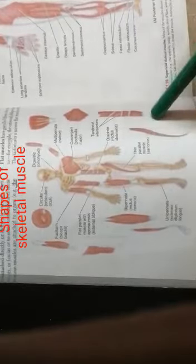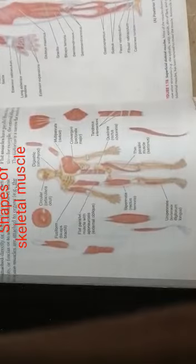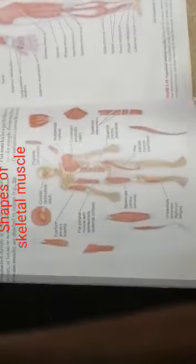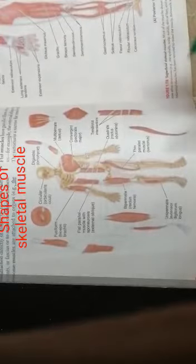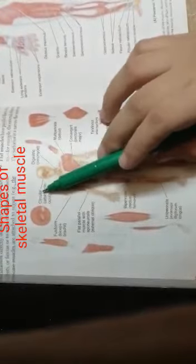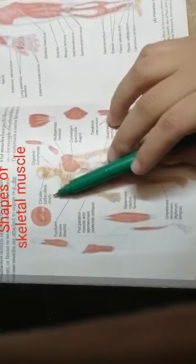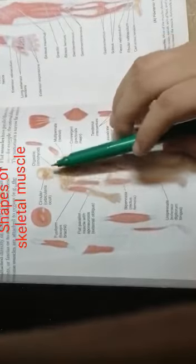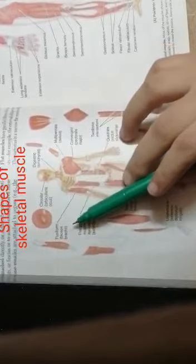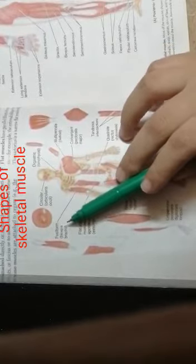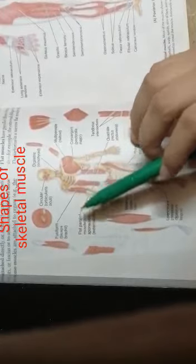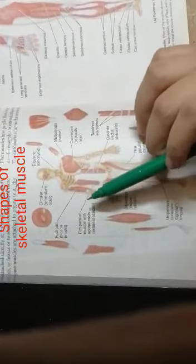From this diagram we can explain the different shapes and different types of skeletal muscle present in our body. The first type shown is the orbicularis, or circular skeletal muscle — the orbicularis oculi — which is present in the eye. The second is the fusiform muscle, an example being the biceps brachii present in the arm, which has a fusiform-like shape.